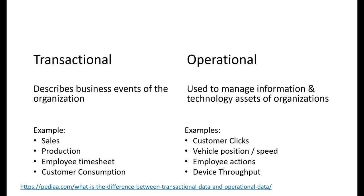In your systems, you might have customer clicks if you have an e-commerce website — basically web analytics. If you're a mining company, you might have vehicle position and speed — that's telemetry. Instead of employee timesheets, you might have employee actions in your systems. Instead of customer consumption at a utility, you might measure throughput of devices on your pipeline. That agglomerates to business activity.